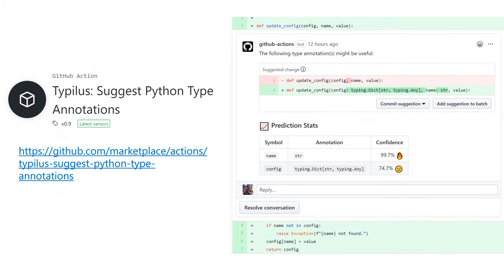We recently released TypeLus as a GitHub action that can be seamlessly integrated into GitHub workflows. The TypeLus action reviews the code and submits comments when a user creates a pull request. TypeLus suggests adding type annotations when it can make confident predictions. For example, here in the slide, TypeLus suggests to annotate the parameter name as a string and the parameter config as a dictionary of strings to any. If you have a Python project, consider trying this out.